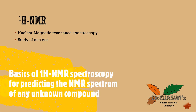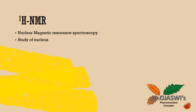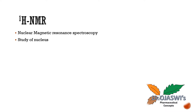1H NMR, that is nuclear magnetic resonance spectroscopy. As the name suggests, we study the nucleus in this particular technique. Unlike other spectroscopy techniques like UV and IR, it is the study of the nucleus in 1H NMR spectroscopy. In UV spectroscopy we study electronic transitions. By using IR spectroscopy we determine various functional groups present in the structure. But by 1H NMR spectroscopy we study the nucleus.